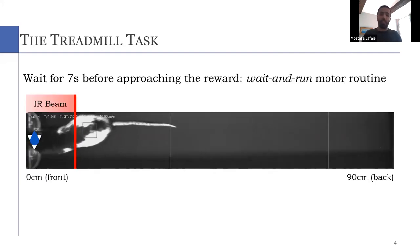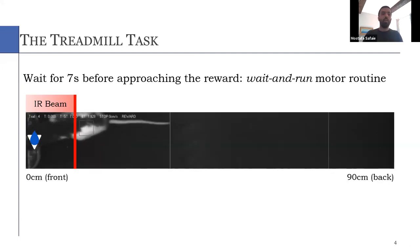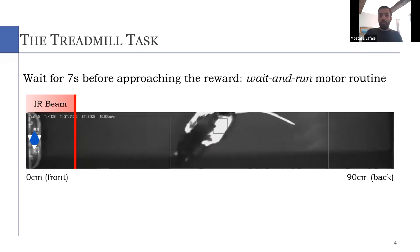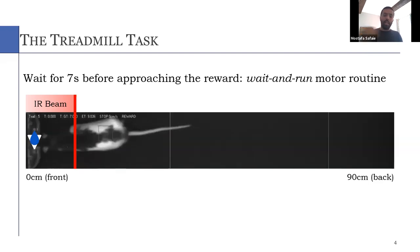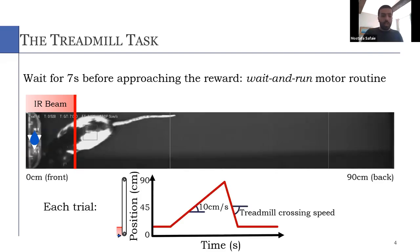We trained animals on a motorized treadmill, and the task is just to wait for seven seconds before approaching the reward. If the animal approaches the reward too early, there's going to be a penalty and no reward. If too late, there's going to be a smaller reward. And what the majority of animals develop is what we call this wait-and-run routine, which includes starting from the front, waiting more or less immobile until the treadmill carries them to the back, and then accelerating forward and crossing the treadmill to get the reward.